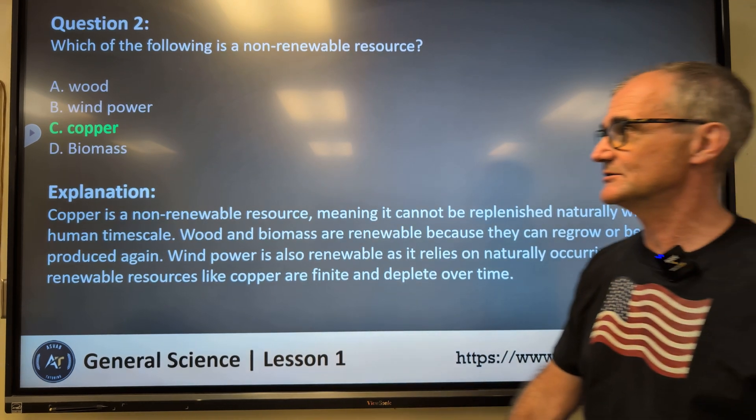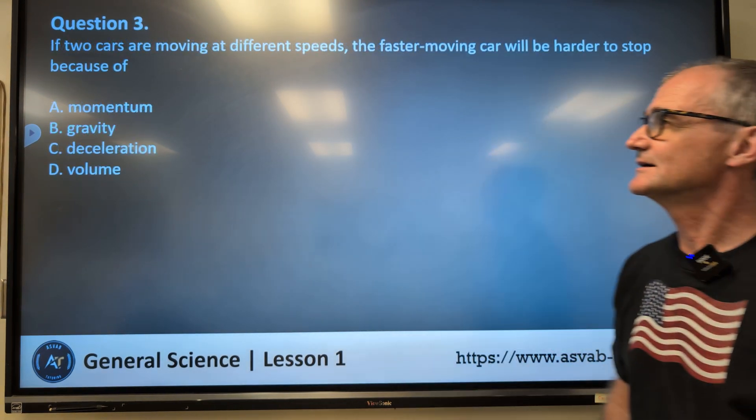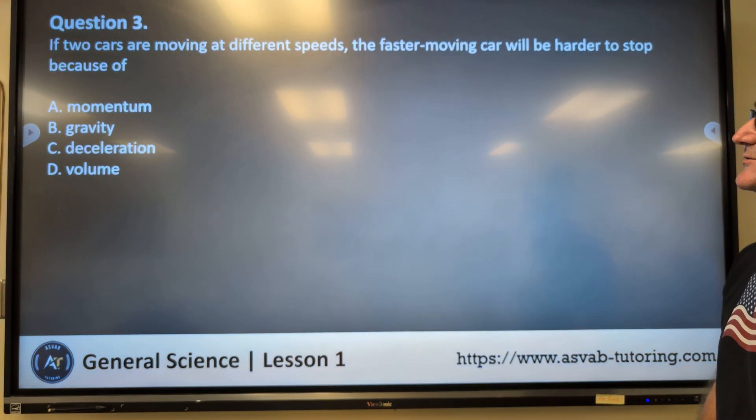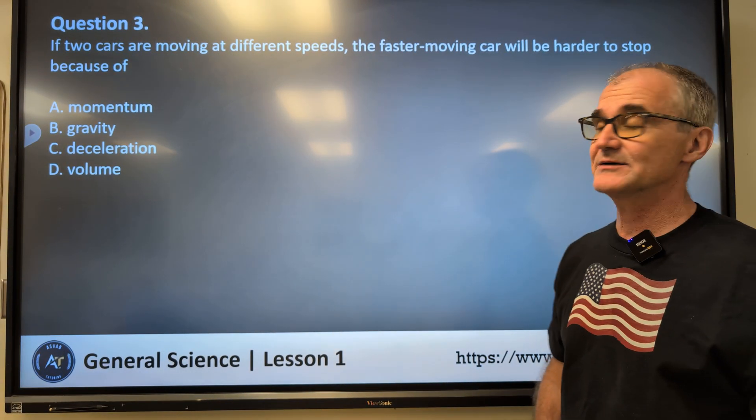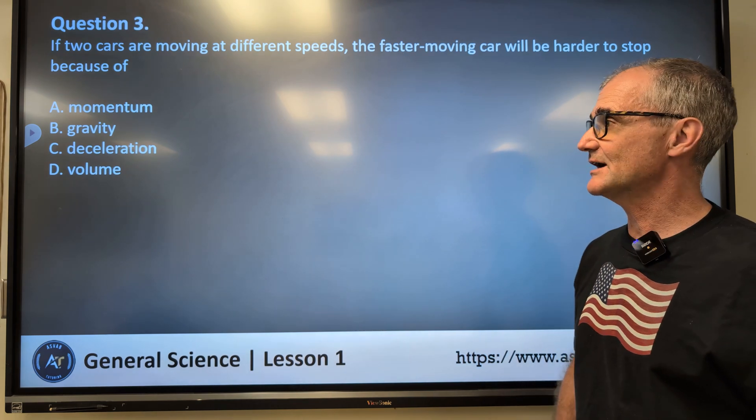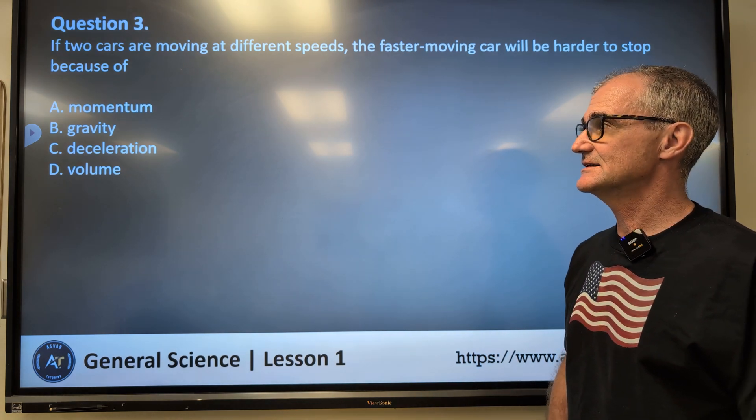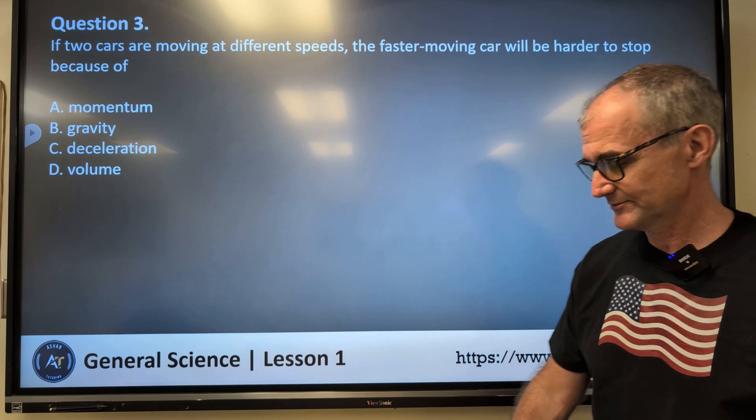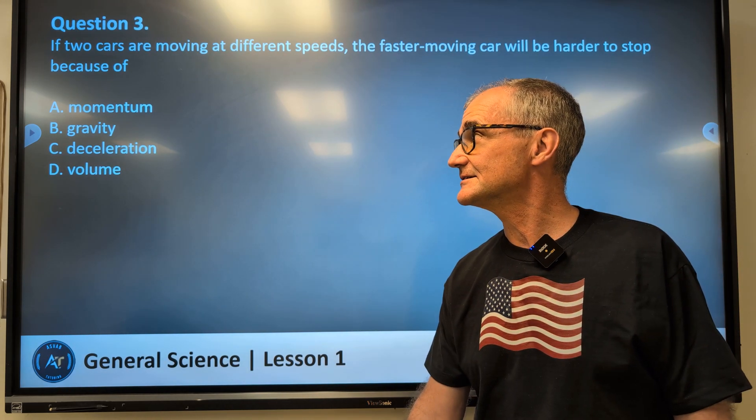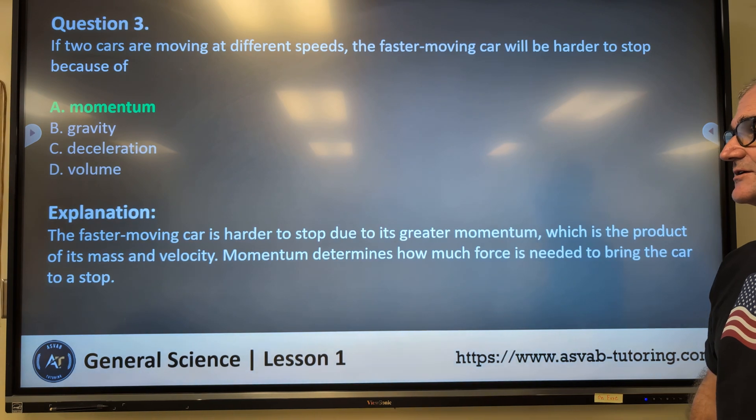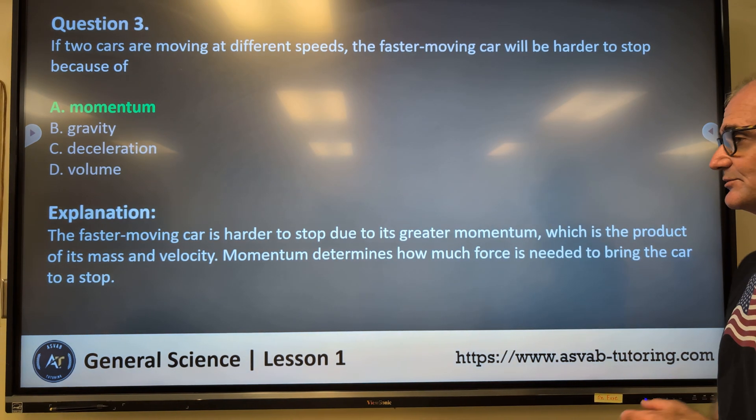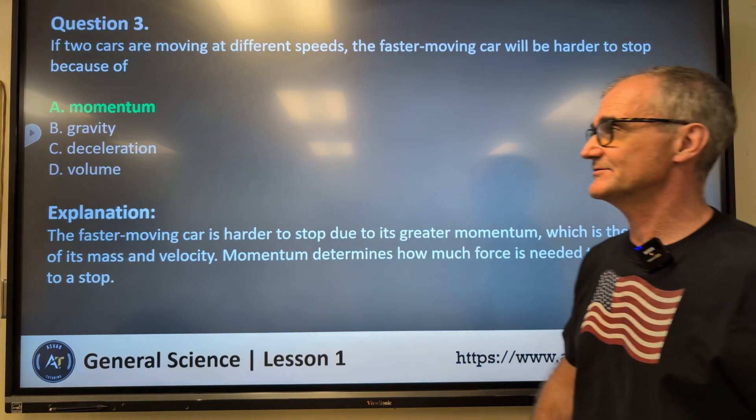If two cars are moving at different speeds, the faster-moving car will be harder to stop because of A, momentum, B, gravity, C, deceleration, D, volume. Correct answer A, momentum. The faster-moving car is harder to stop due to its greater momentum, which is a product of its mass and velocity.